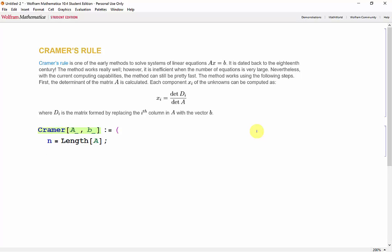Now we need to do the actual column switching before we can take the determinants and do our divisions. The easiest way to do this is to create a table that contains A n times, then manipulate each element of the table. So Di will be a table containing A n times.